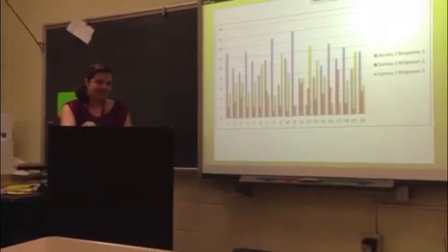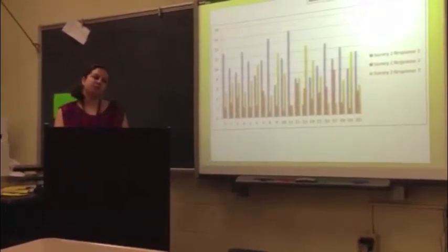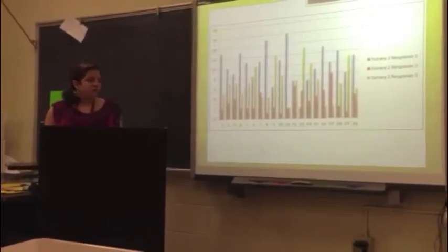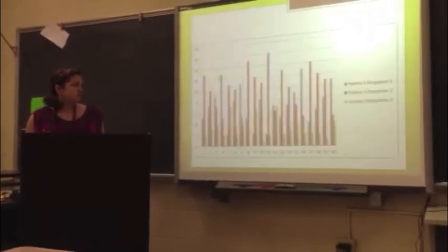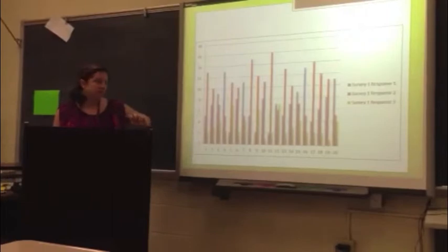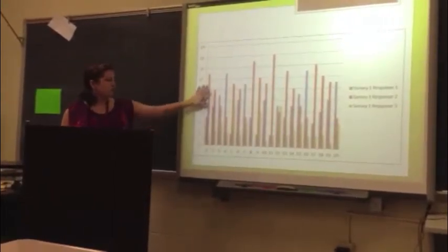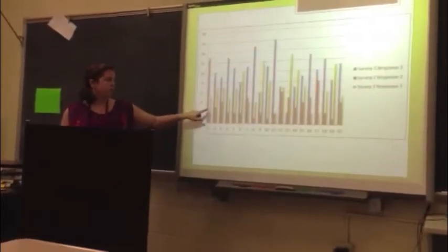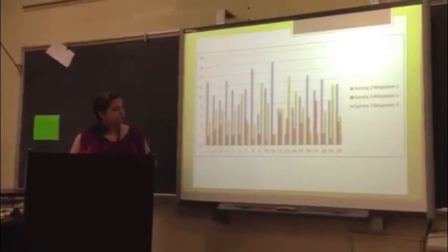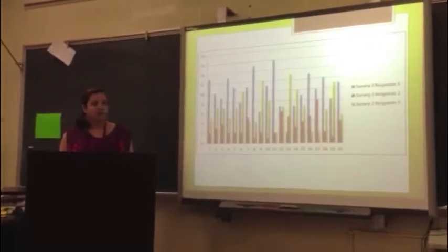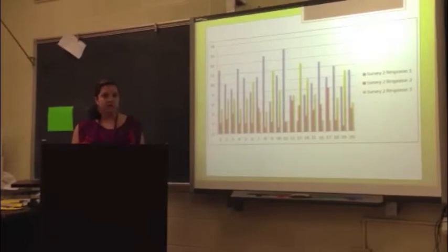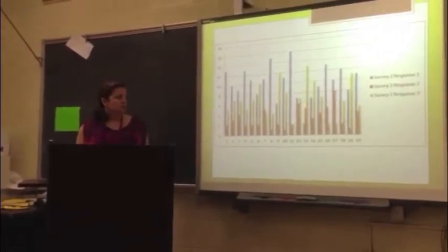During Q&A, a clarifying question confirmed that the first graph was for facilitated instruction and the second was for direct instruction. As explained, the red bars represent response two — sometimes agree — and across 20 questions they were chosen overwhelmingly more than responses one or three in the facilitation lesson. After direct instruction, responses one and three were chosen much more over two, indicating students had a clearer understanding of their own moral code and how they would respond to situations, rather than being in the middle.